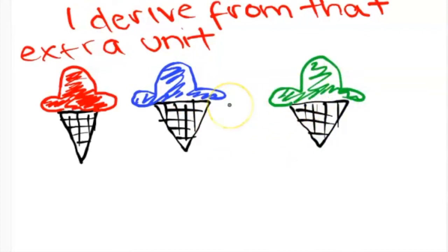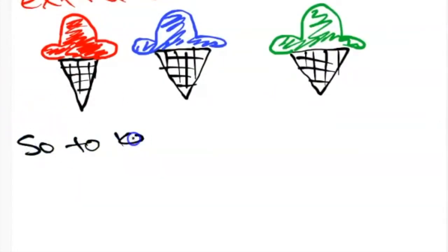By the third ice cream, it's even less. By the fourth ice cream, it's even less. In other words, the marginal benefit is falling the more I consume.